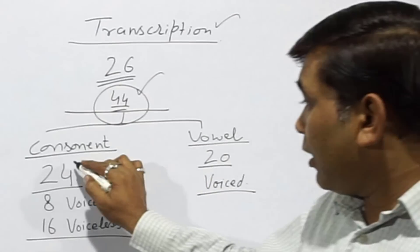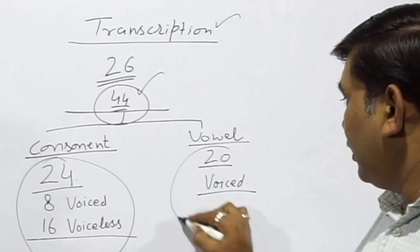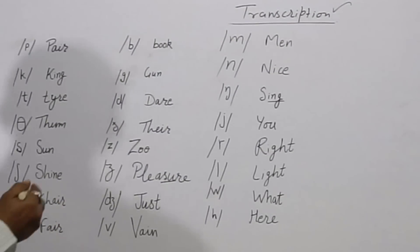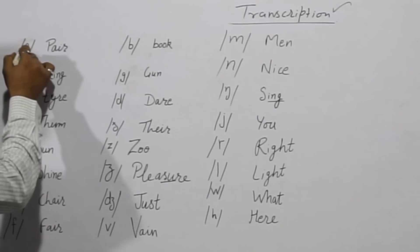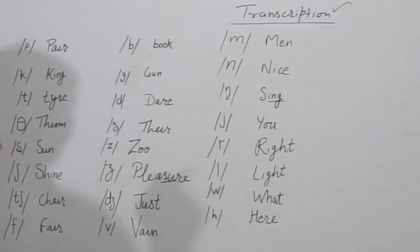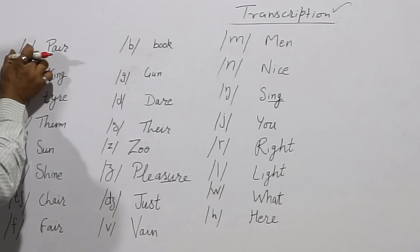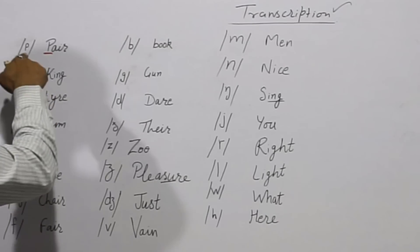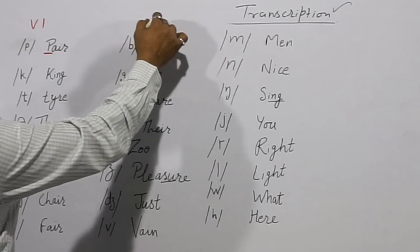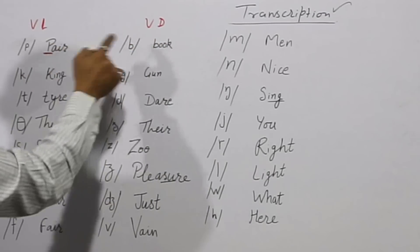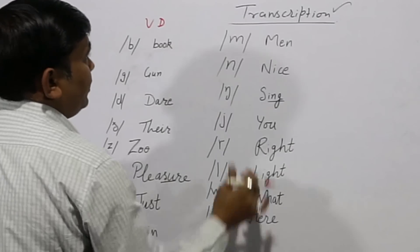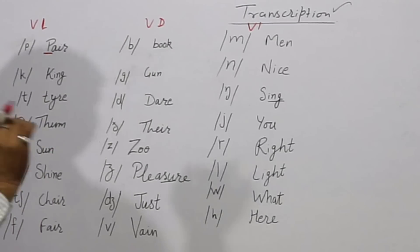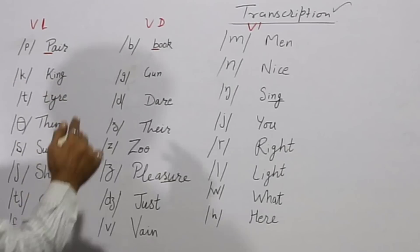Let's discuss consonants first, and then we will discuss vowels. Our first symbol is /p/ — this is just like a small p in print form. It is the /p/ sound as in 'pair'. This is voiceless. Next is /b/ — just like small b — the /b/ sound as in 'book'.